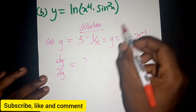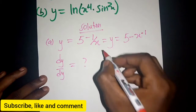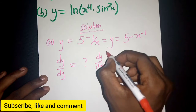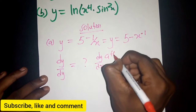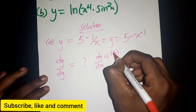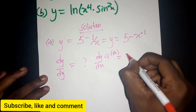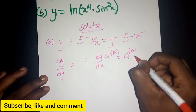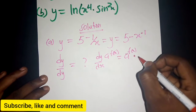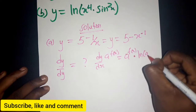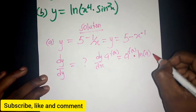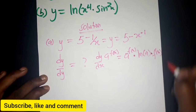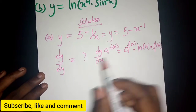In solving a relation like this, we have a formula. If you have dy/dx of a function a to the power f(x), this is equal to a to the power f(x), multiplied by the natural log of the base a, then also multiplied by the differential of the exponent.